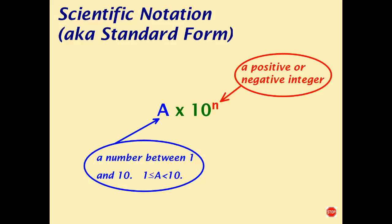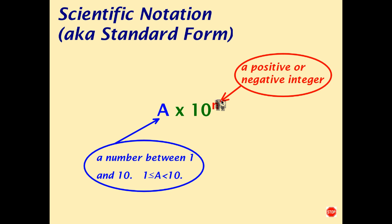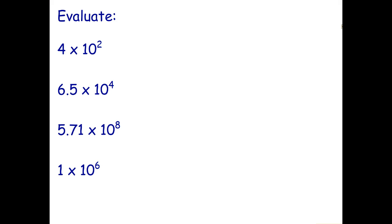Hello students. In the last video we very quickly introduced you to the reason for writing a number in scientific notation. So just a quick reminder: scientific notation is when we write a number in the form of a number between 1 and 10, including 1 but not including 10, multiplied by a power of 10. That power can be either a positive or a negative integer, such as 10 to the negative 5 or 10 to the negative 4.